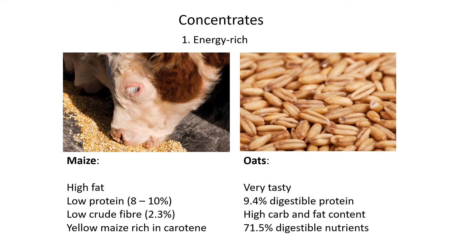You need to know some examples of different concentrates and roughages. For energy-rich concentrates, the first example is maize. You don't have to know the exact percentages — these are just for comparison. Maize has a high fat content, which helps fatten animals, and has a low crude protein content. Yellow maize is rich in carotene.